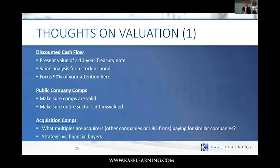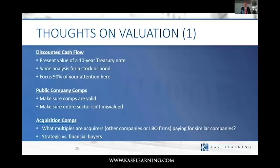Other valuation methods include public company comps — if a stock trades at 10x earnings while every other company in the sector trades at 15x, that may indicate cheapness. Also look at M&A activity: what multiples of earnings or EBITDA are companies being acquired for? Historical comps are also useful — if a stock has traded at 15-20x earnings for 20 years, misses a quarter, and now trades at 10x, take a hard look.